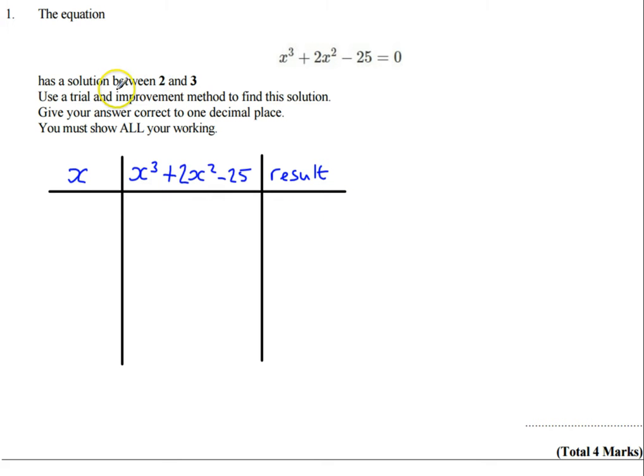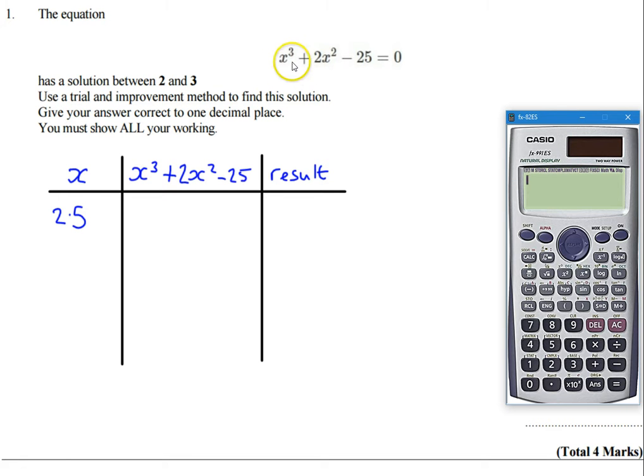So because it has a solution between 2 and 3, I'm going to start by trying in the middle of those which is 2.5. So if I take the number 2.5 and put it into my calculator we've got 2.5³ + 2 × 2.5² - 25.